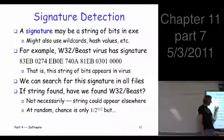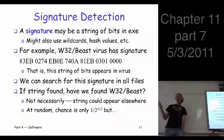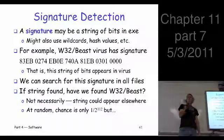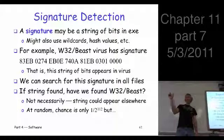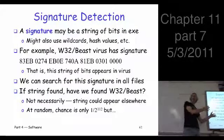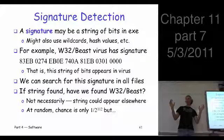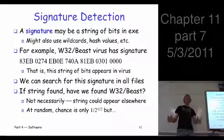If you look at this, there are 112 bits here. If code were really random — if these were just random bits — the chance you'd find this somewhere else would be only 1 in 2 to the 112, which would effectively never happen. But the fact is it represents actual code, and code is not random bits. So there is a realistic chance, even with 112 bits, that you could find a match somewhere else. It's a tradeoff: you'd like a small number of bits because it's easier to scan, but a large number of bits gives you fewer false positives. Lots of tradeoffs here.